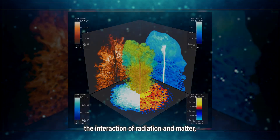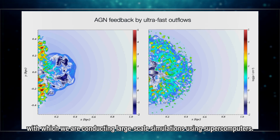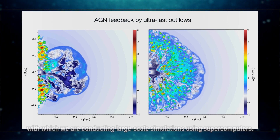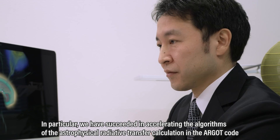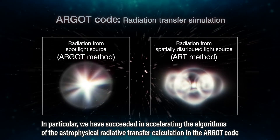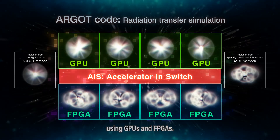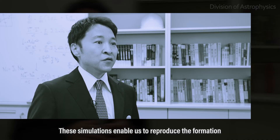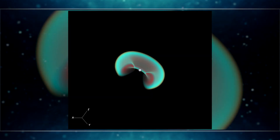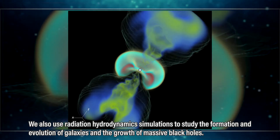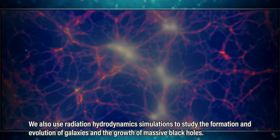A unique feature of our research is that we have developed our own numerical methods that accurately capture the propagation of radiation, the interaction of radiation and matter, and the effect of gravity including dark matter, with which we conduct large-scale simulations using supercomputers. In particular, we have succeeded in accelerating the algorithm of the astrophysical radiative transfer calculation in the ALGO code using GPUs and FPGAs. These simulations enable us to reproduce the formation of the first stars and galaxies in the early universe. We also use radiation hydrodynamics simulations to study the formation and evolution of galaxies and the growth of massive black holes.